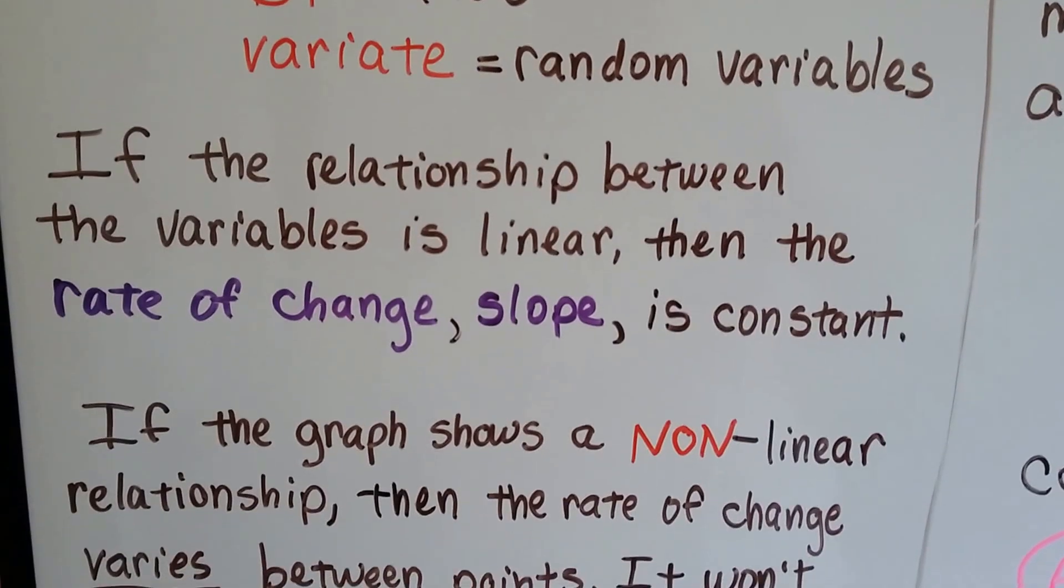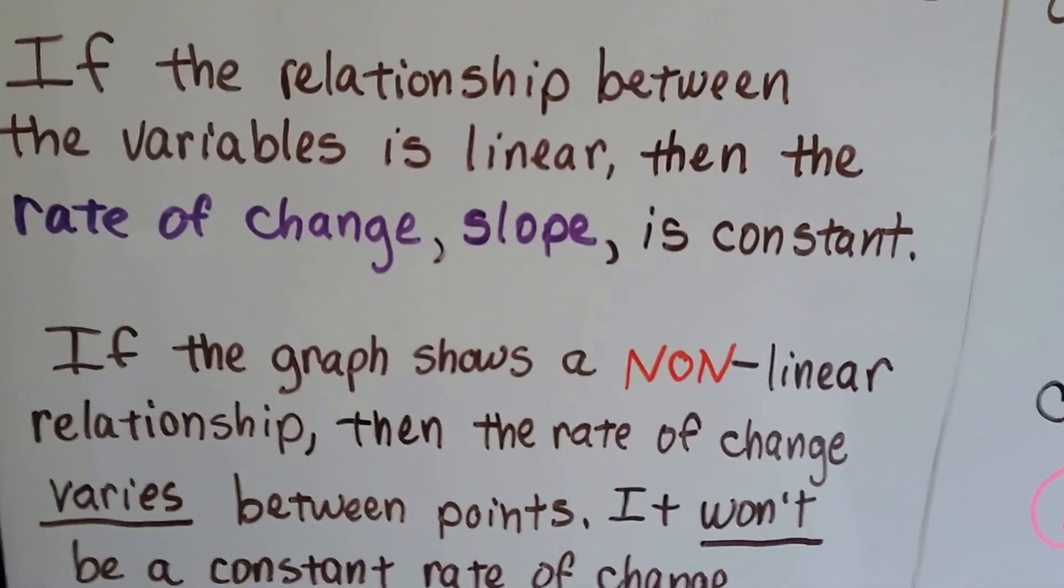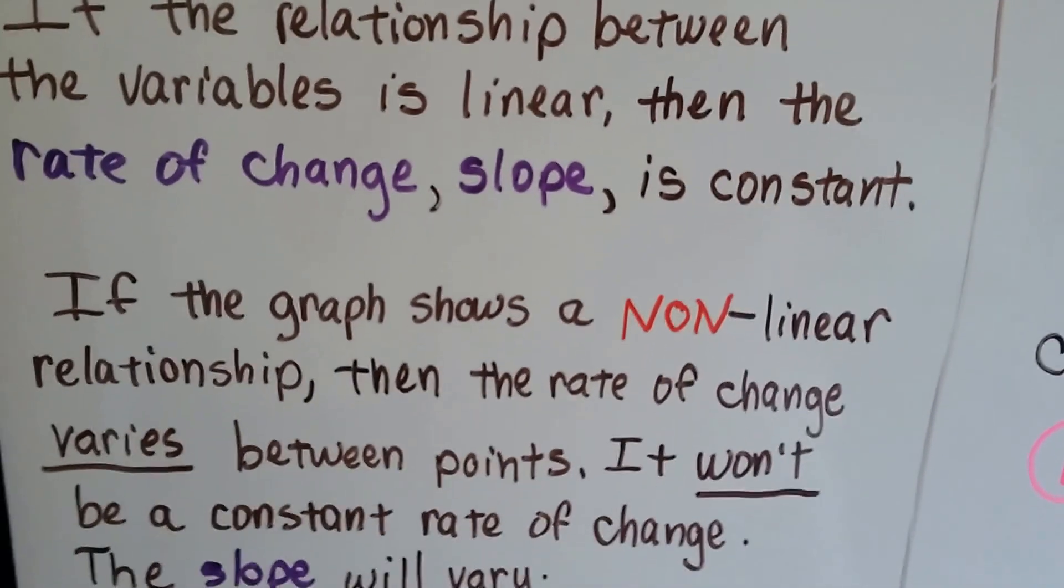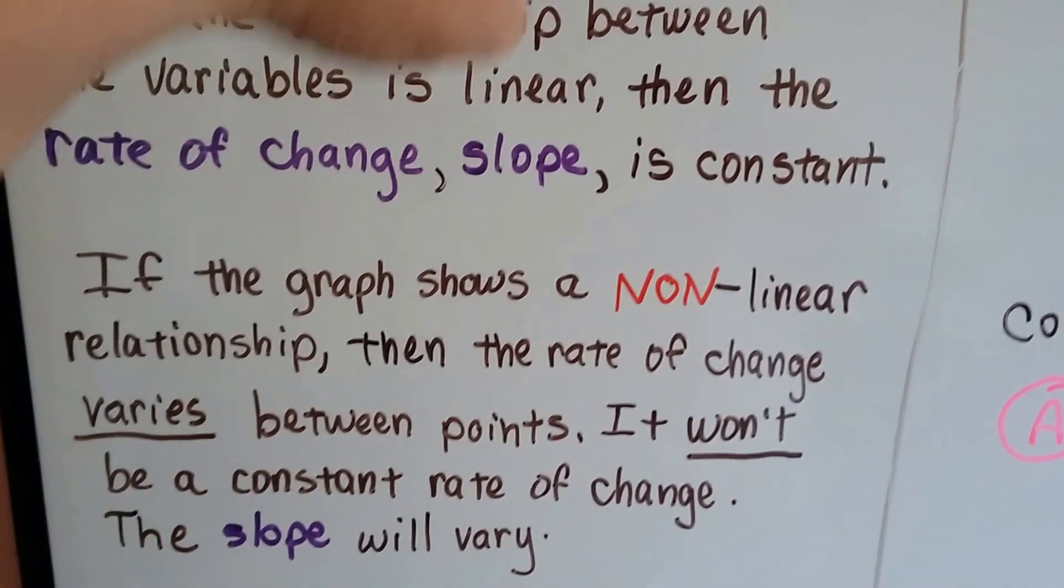If the relationship between the variables is linear, then the rate of change, that slope, is constant. We'll see a nice pretty line going slowly up.